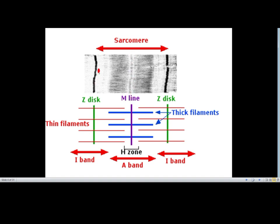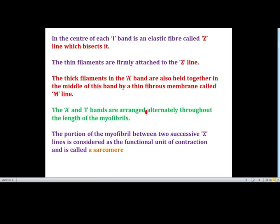In the sarcomere, the central line is called the M line, which passes through the middle part of the thick filament. The middle part of the thin filament has a fibrous line called the Z disc or Z line. This is the thick filament and this is the thin filament. Between the middle part of the thick filament — the M line — and the non-overlapping region is the H zone. The I band and A band are distinct regions within the sarcomere.